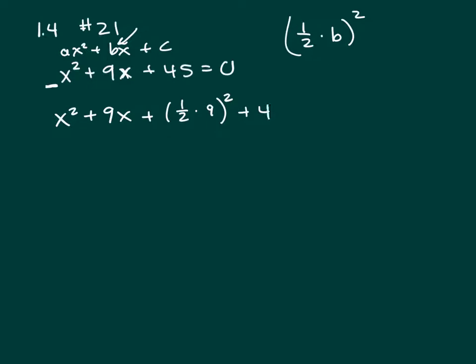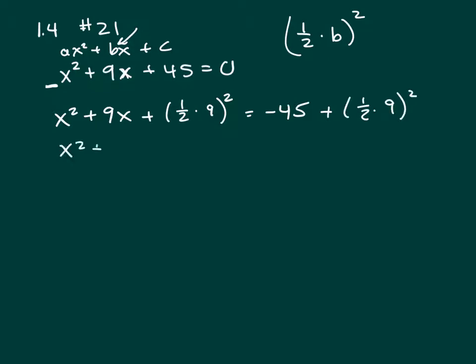Let's move the 45 to the other side — that's what we should do. So that would be a negative 45. We've added one-half times 9 squared to the left-hand side, and if you add something to the left, you've got to add it to the right. So this is x squared plus 9x plus 9 over 2 squared, which is 81 over 4, equals negative 45 plus 81 over 4.